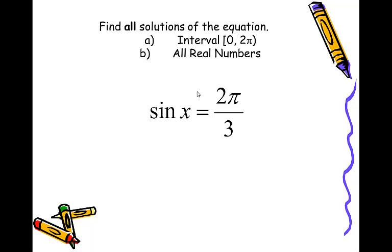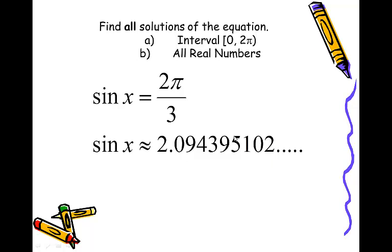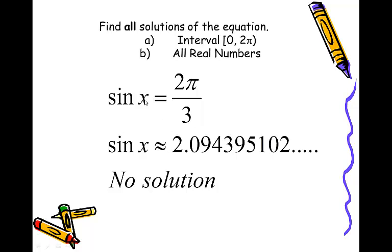Sine of x equals 2 pi over 3 — and this is a trick question. People think this is the 60-degree angle in quadrant 2, but no. The value 2 pi over 3 is approximately 2.09. So the question is: what angle has a sine of 2.09? Nothing. There is no angle whose sine is 2.09 — there is no angle whose sine is bigger than 1. Therefore there is no solution.